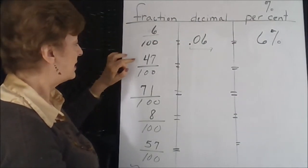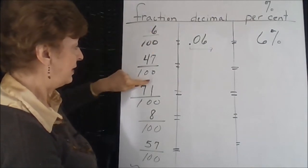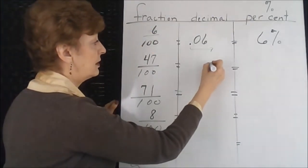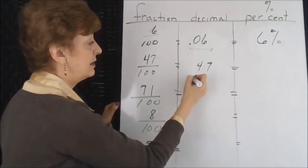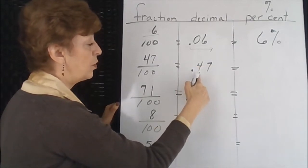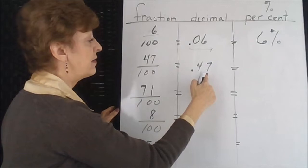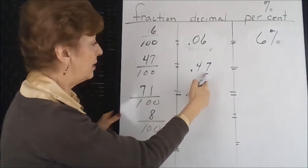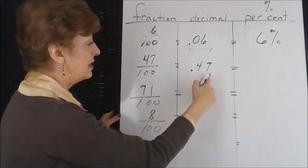47 hundredths. The seven has to end up in the hundredths column, so we would write it like this. The decimal point would go here. We have the four in the tenths position, the seven in the hundredths position, just like what we need. Forty-seven hundredths.